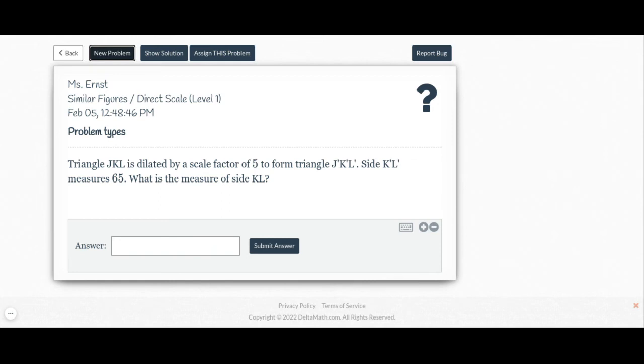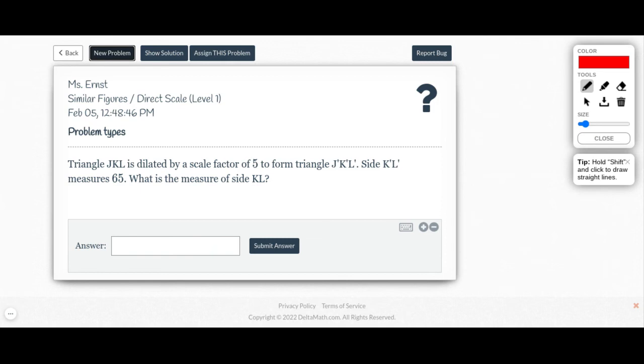It says triangle JKL is dilated by a scale factor of 5 to form triangle JKL prime. Side KL prime measures 65. What is the measure of side KL? So here I'm going to start off. I'm going to draw my original triangle, and this one was JKL.